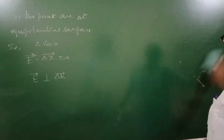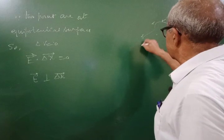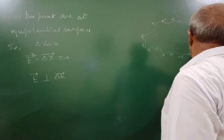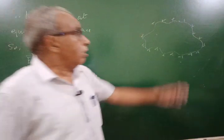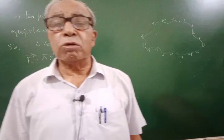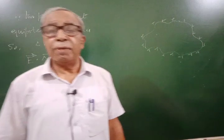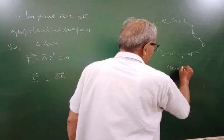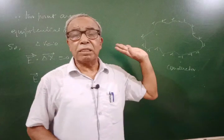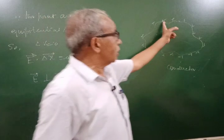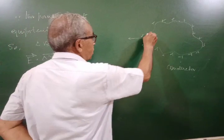In our textbook, for a conductor surface where charge is present and static — since charge is static means charge is not flowing, meaning potential at every point is the same. If potential at every point is the same, it means the conductor surface is an equipotential surface. In static conditions, charge does not flow; if charge does not flow, potential is the same; and if potential is the same, electric field lines are normal to the surface.